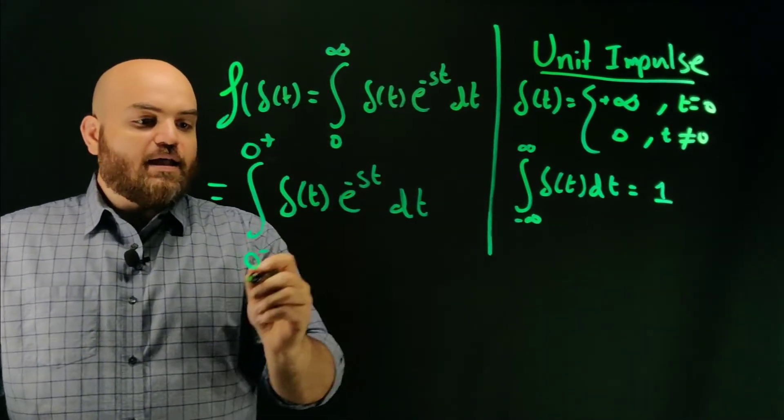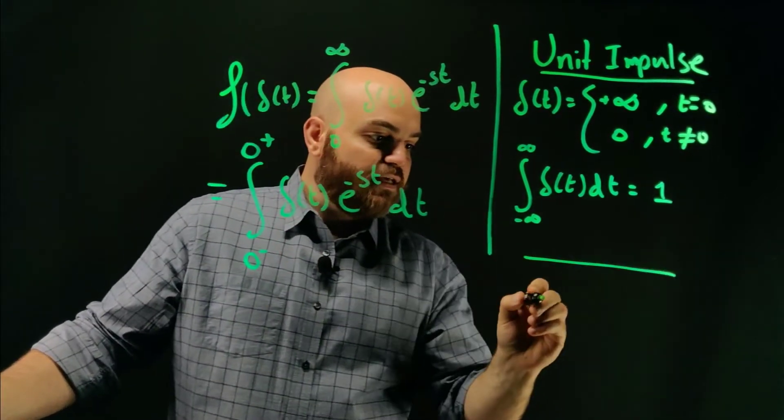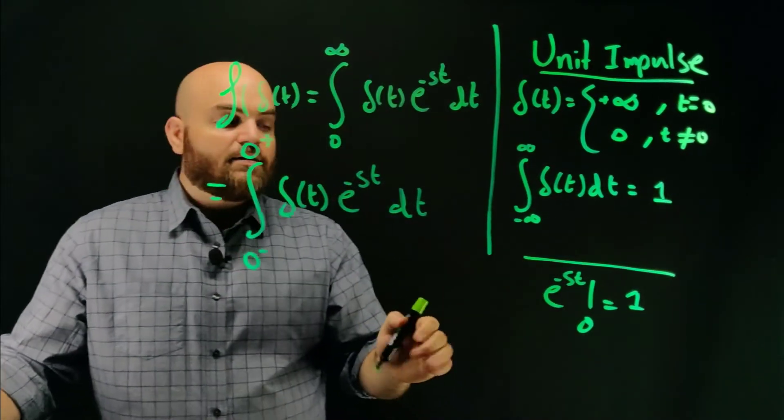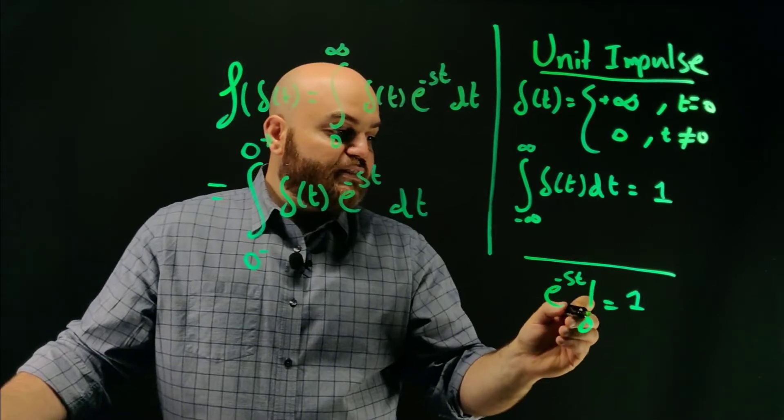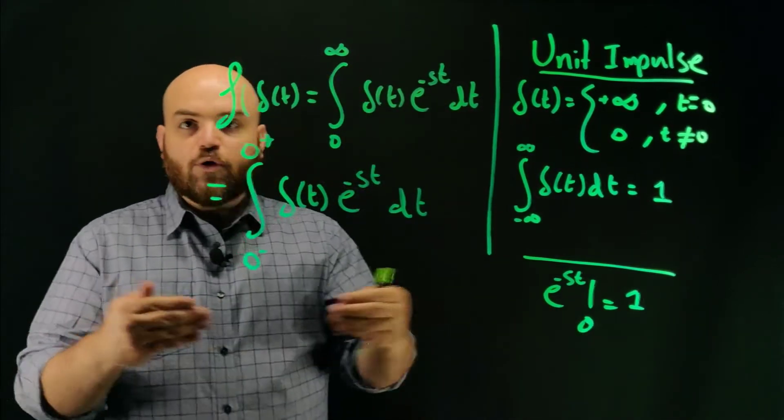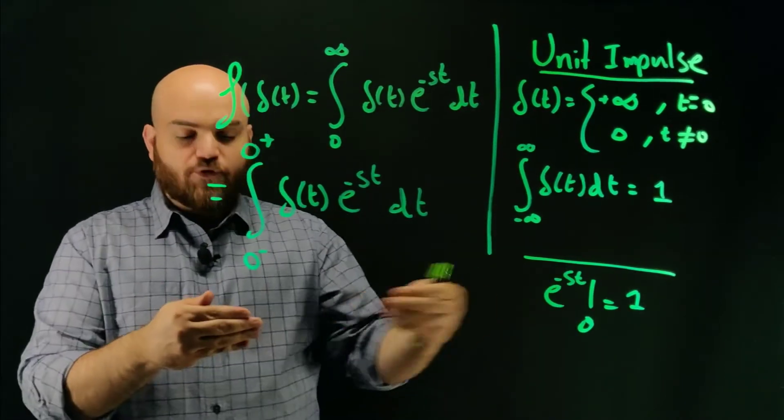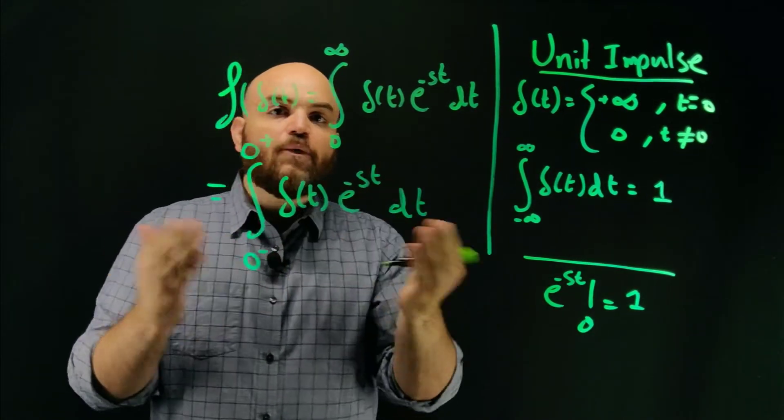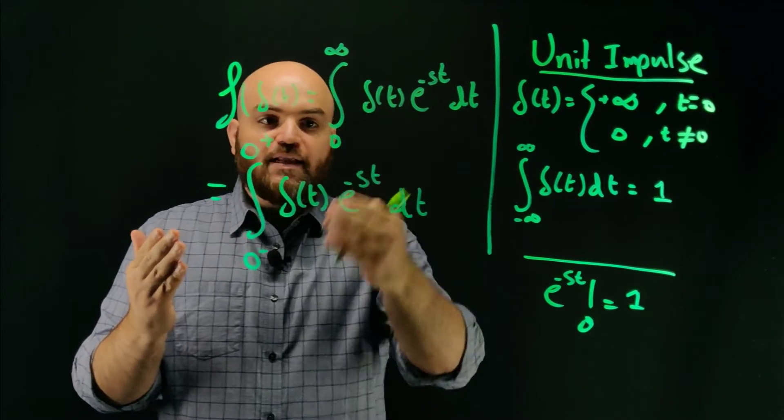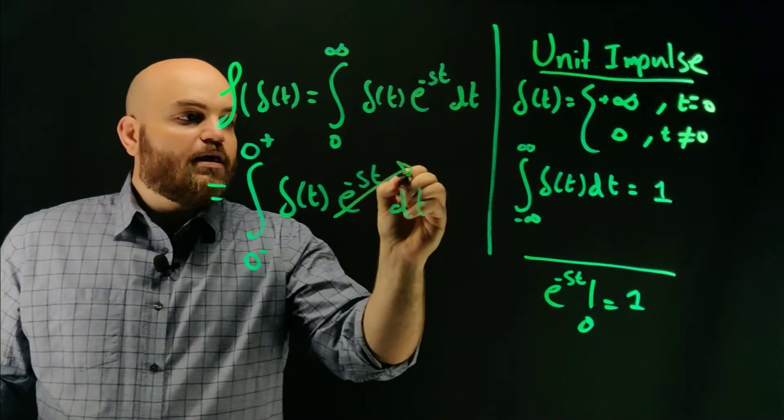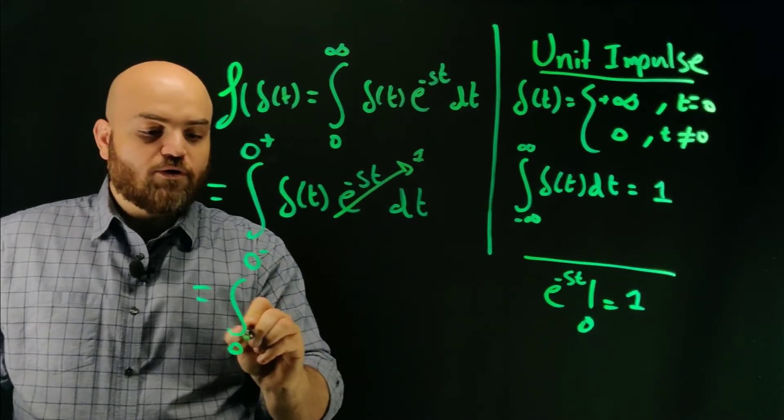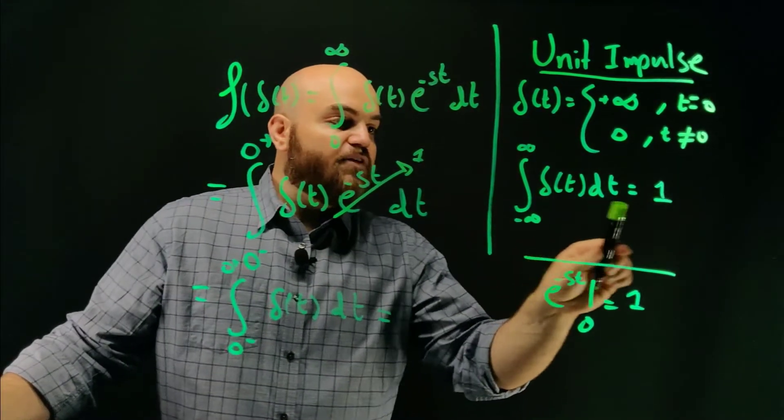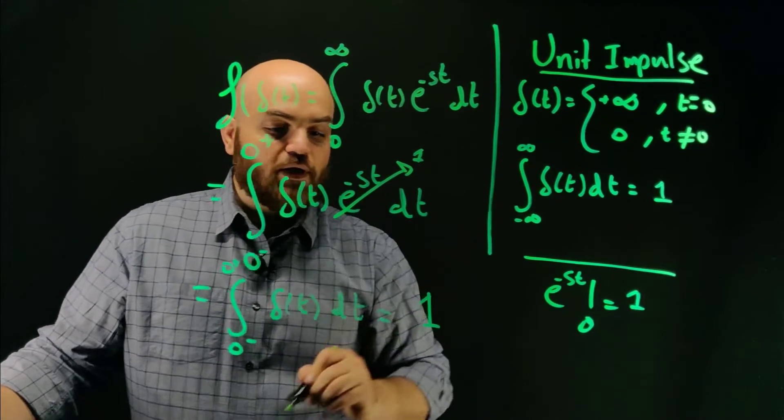So if we do that, then we can say we know that e to the minus st at zero, we know that that's equal to one, and it's defined. And so whether it's at zero minus or zero plus, it doesn't matter. So if you are approaching an exponential function like this from the left or from the right at zero, you're always going to get to the value of one. So really, inside this integral, this term is going to be one, because we know that that is the value. So really, what you end up with, if this becomes one, is the integral from zero minus to zero plus of the delta function dt.